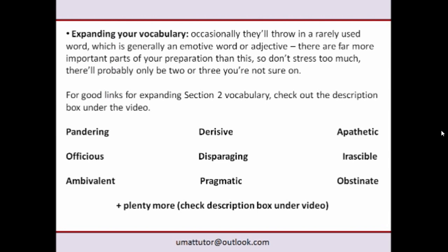The second-to-last point is about vocabulary. Occasionally the exam will include a few unusual emotive words or adjectives in Section 2. There are links in the description to pages with more detailed word lists. This isn't the most important part of your preparation since there'll probably only be two or three unfamiliar words, but if you have spare time it could be useful to scan through that list and improve on any gaps.